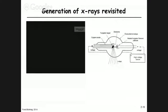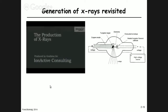To recap x-ray generation: we have the positively charged tungsten target on one side, the negatively charged filament cathode on the other, and a high voltage source providing the voltage difference. We heat the cathode filament, electrons are liberated, they are accelerated toward the target, and when they hit the target they produce x-rays.